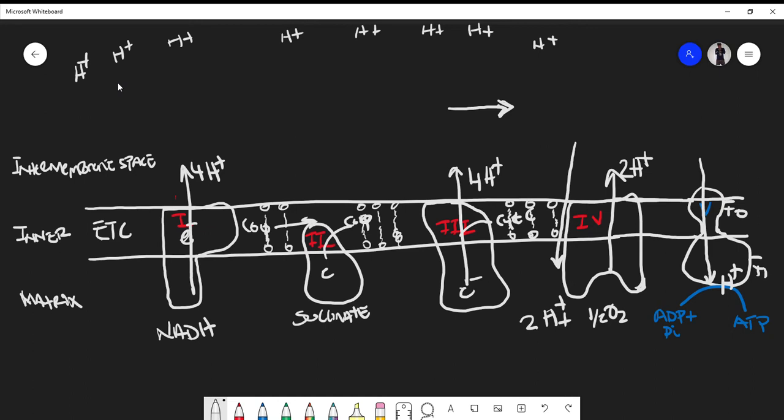We're taking the energy from electrons into the intermembrane space. Complex III gives us about four, and Complex IV gives us about two H+. The idea is that we're putting H+ ions into the intermembrane space.